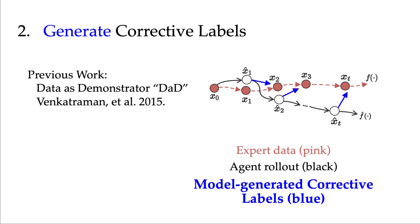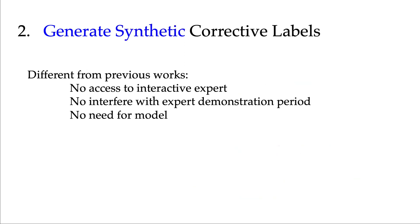Instead, we want to generate synthetic labels. Previous work like Data as Demonstrator or DAD basically used a model to roll out the learner policy, observe where the policy is deviating, and then try to use model-based approach to come up with an action label that will bring the learner from the deviated states back onto some expert trajectories. However, generating this blue label here is not a trivial task. It is likely to require a model which we don't have an accurate enough model for. So we hope to generate synthetic corrective labels without burdening the expert or requiring a model. We'll propose two methods.